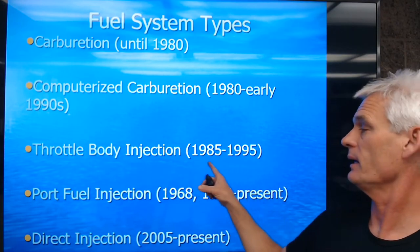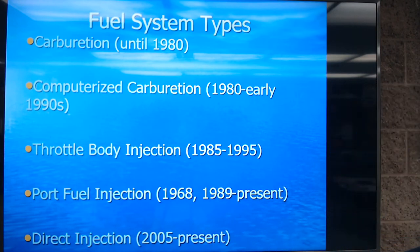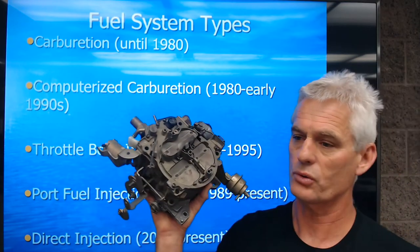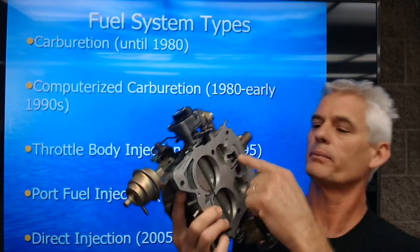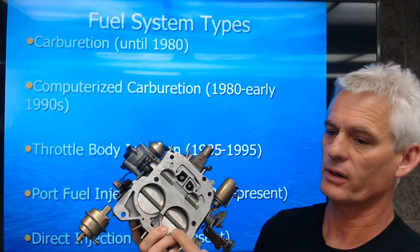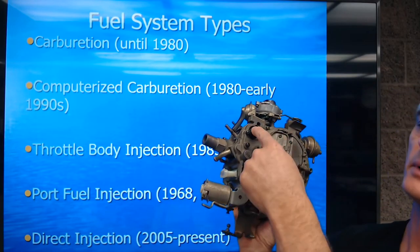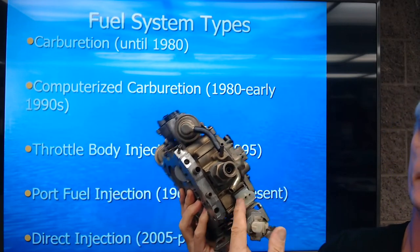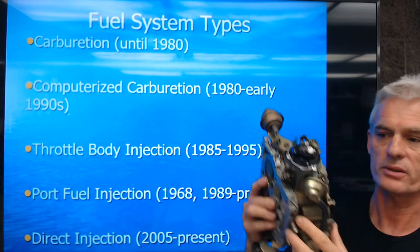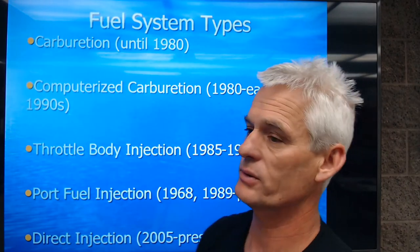Starting in about 1985 up until 1995, we had throttle body injection. Here's a Rochester Quadrajet four-barrel carburetor — you can see the two smaller primaries and the two very large secondaries. On this computer-controlled carb, you can see what's called a mixture-controlled solenoid, and over here this white connector is a throttle position sensor. So there are some electronics on this to do a little better with gas mileage and fuel emissions.